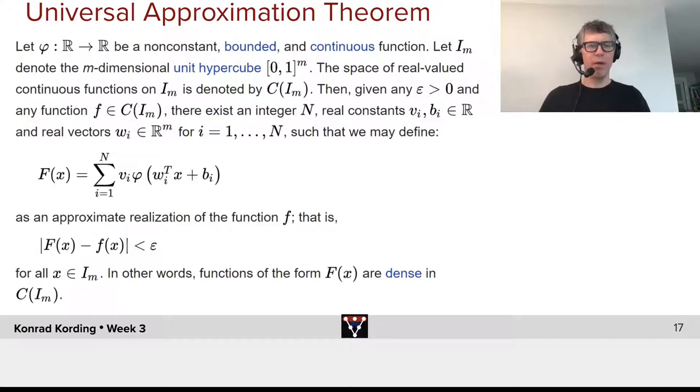So let phi be a function from R to R. It needs to be non-constant, okay? Otherwise, if I give you a 0 as a function, you can't build anything out of it. It needs to be bounded. So that means it just can't get outside of a certain bound, and it needs to be continuous.